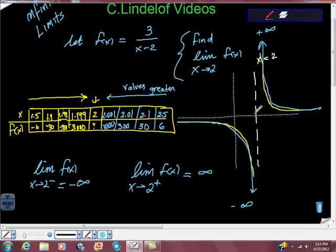Also remember this line right here that it approaches is called a vertical asymptote. Okay, you guys, I'm going to call it a day on this one. Hope you got something from this. Please subscribe if you haven't already subscribed and your comments are always welcome. Thanks.